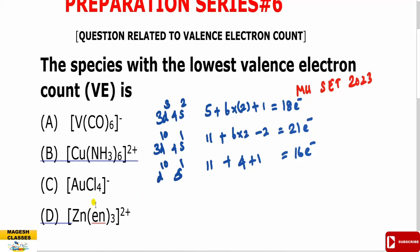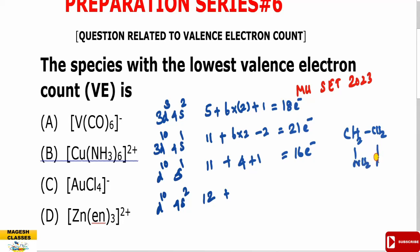The last one — Zinc — has a d¹⁰ 4s² configuration, so the number of electrons is 12 from Zinc. Ethylenediamine ligand is NH₂-CH₂-CH₂-NH₂. Each ethylenediamine gives 4 electrons, so 3 into 4 equals 12, and minus 2 for the 2+ charge. So, 12 plus 12 minus 2 equals 22 electrons.